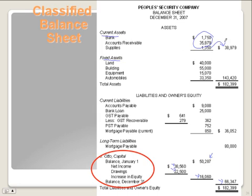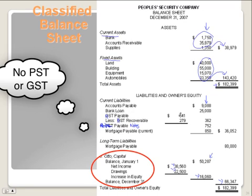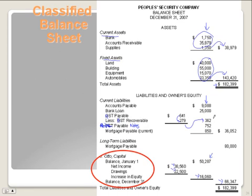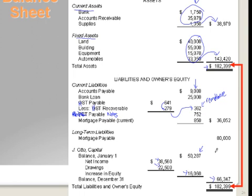Basically all we are doing is splitting our accounts into current and fixed. We add up the current assets and put the total, then add up fixed assets and put that total, and when you add current assets and fixed assets together you get total assets. For liabilities, we list them similarly. We have HST payable minus HST recoverable and put the answer there — in this case because payable is larger than recoverable we have our remittance. Make sure your total assets equal your total liabilities and owner's equity: current liabilities plus long-term liabilities plus ending capital gives total liabilities and owner's equity.